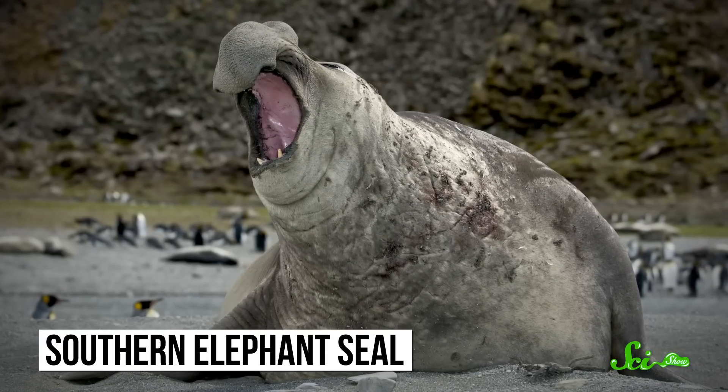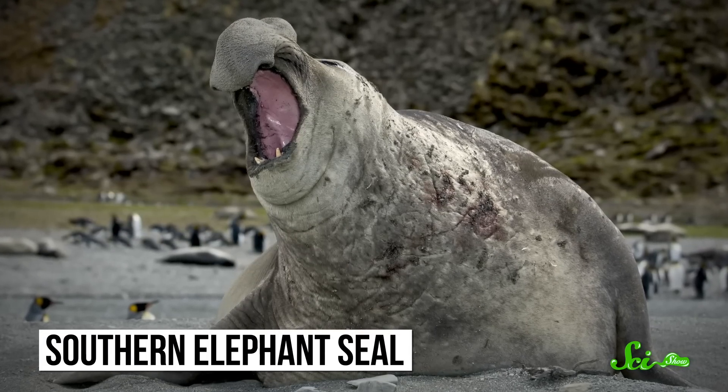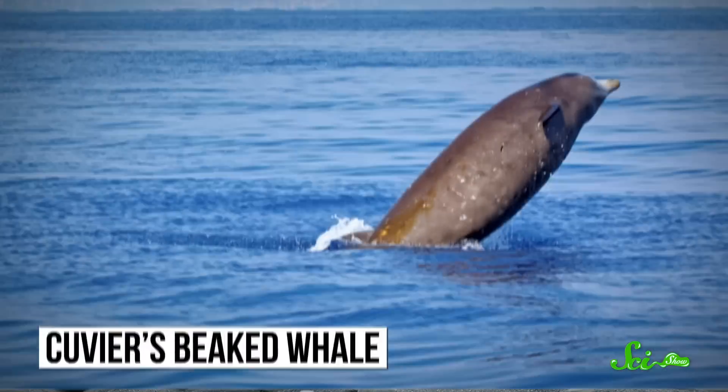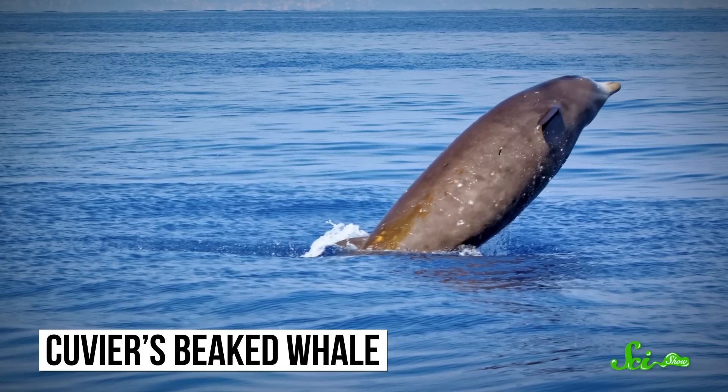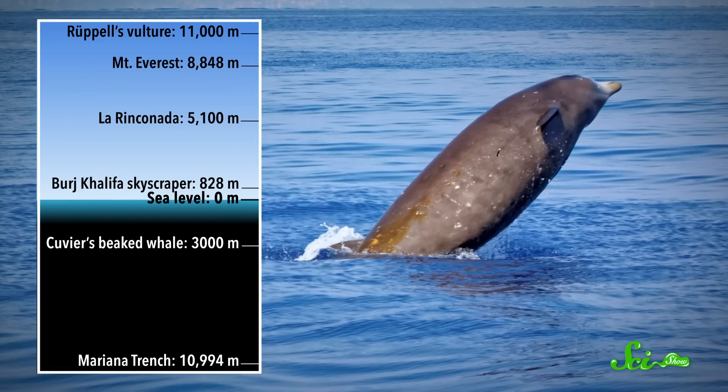But that is nothing compared to some other mammals. Southern elephant seals can dive more than 2,400 meters. And in 2014, scientists watched as a Cuvier's beaked whale dove 3,000 meters below the surface. Since mammals have to breathe air, they need special adaptations to dive that far.